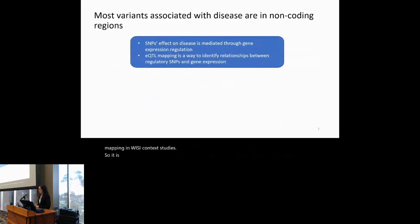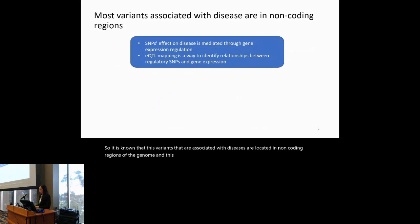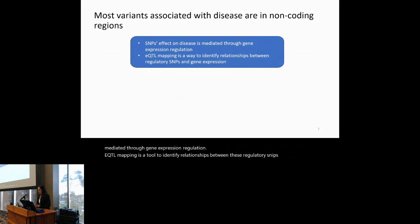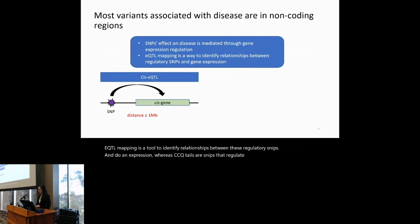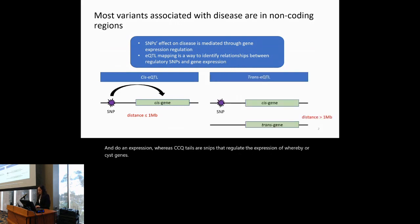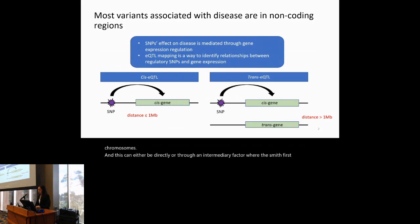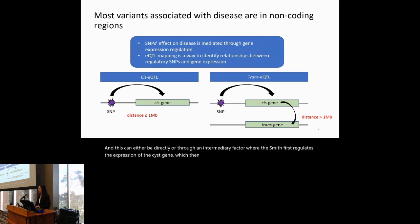Most variants associated with diseases are located in non-coding regions of the genome, leading to the hypothesis that their effect on disease is mediated through gene expression regulation. EQTL mapping identifies relationships between regulatory SNPs and gene expression. Cis-EQTLs are SNPs that regulate nearby genes, while trans-EQTLs regulate distal genes — either directly or through an intermediary cis gene.